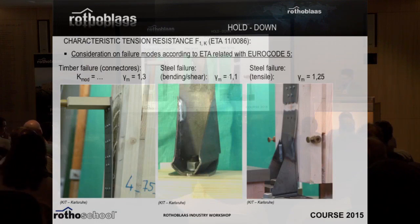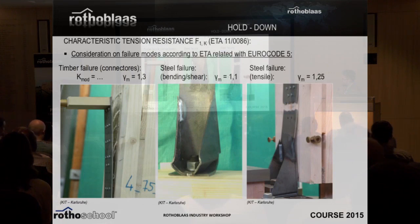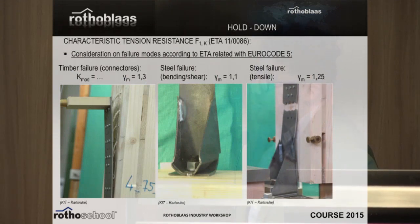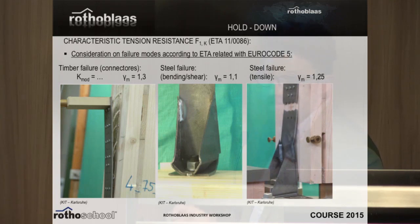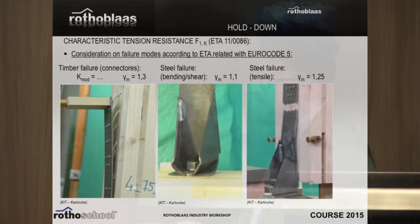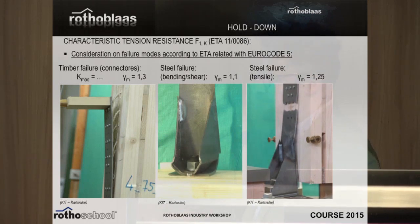This is the example. You have three ways for the hold down to fail: first related to nails and timber — K mod depends on live load and the factor is 1.3 according to Eurocode for connectors. The steel bending failure is related to another factor. And the tensile steel failure is given from the ETA characteristic resistance. The designer is responsible for the correct factor to use when passing from characteristic to design values — you don't always find this factor in any code.